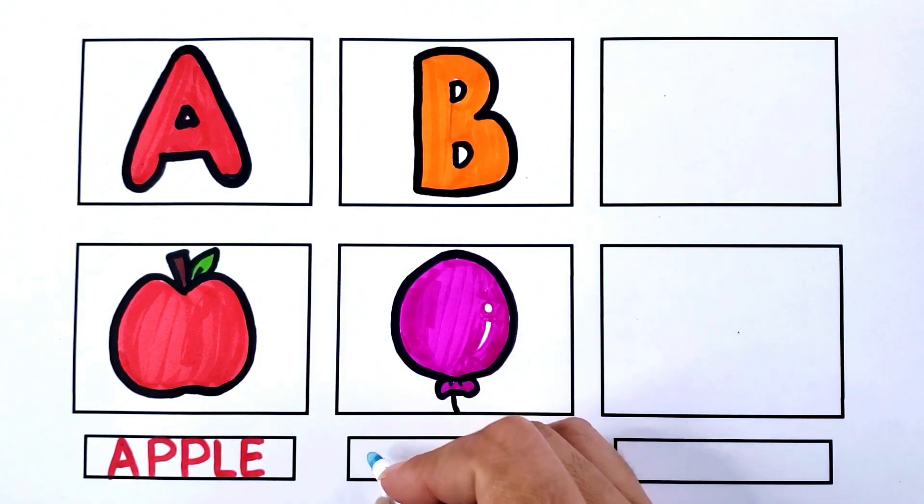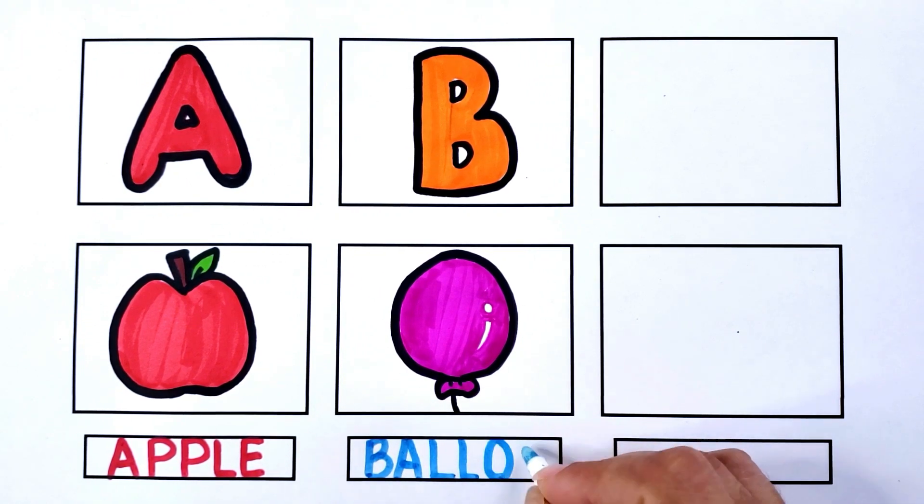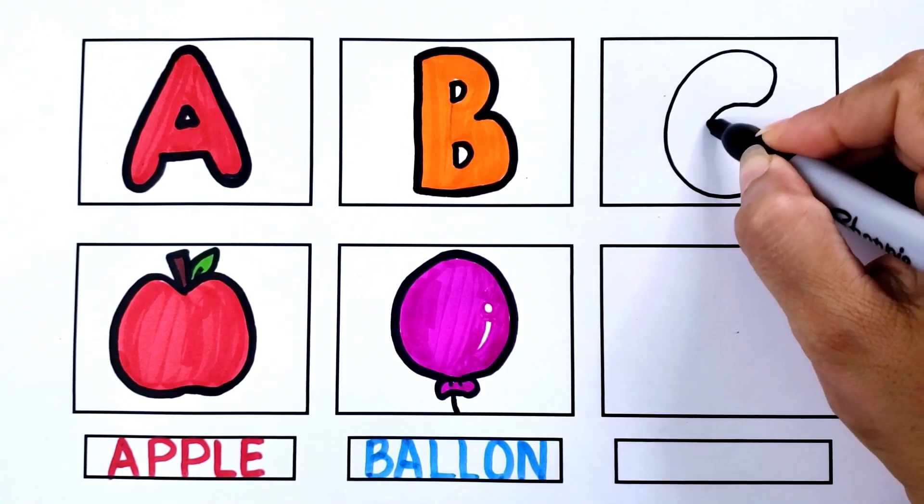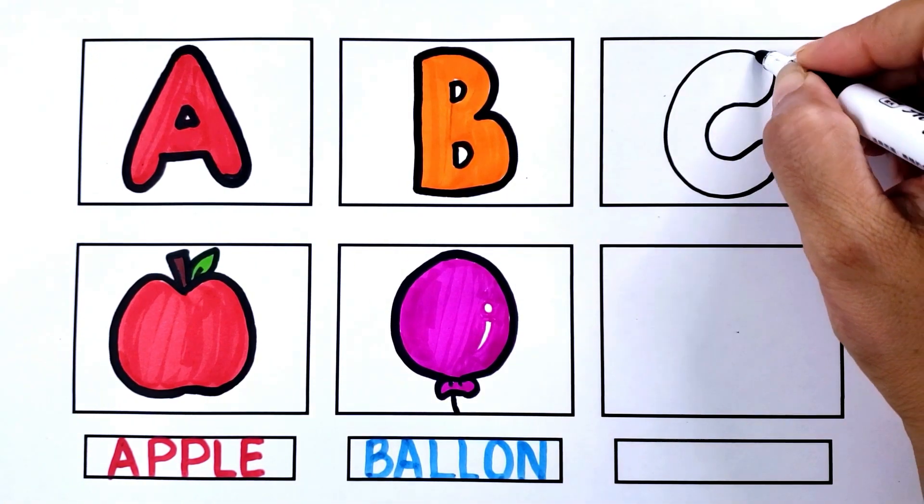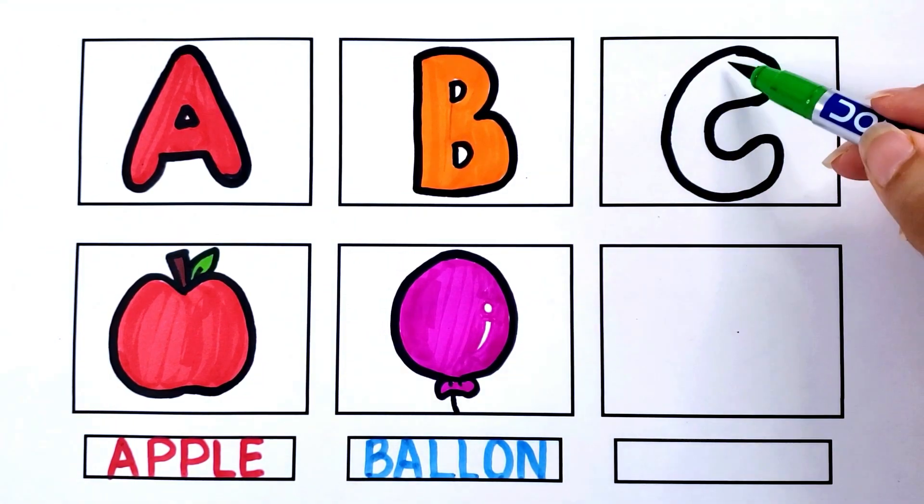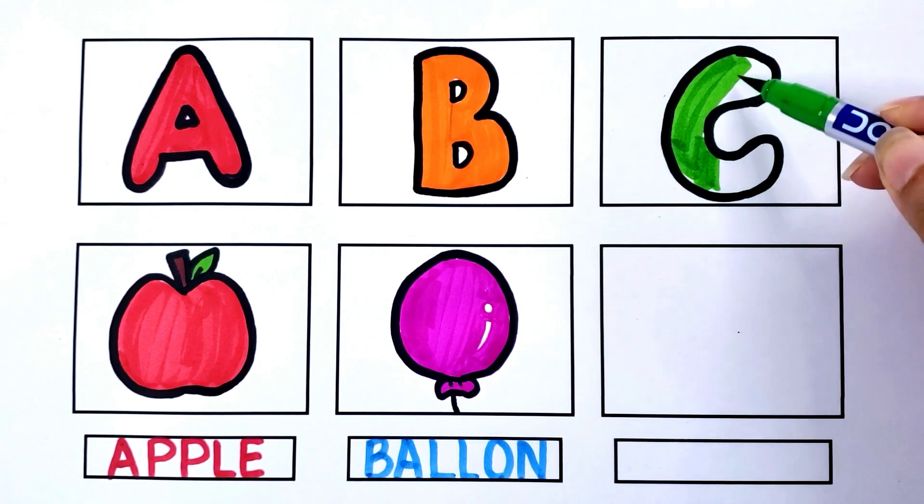Now I know my ABCs, next time won't you sing with me? A, apple. B, balloon. Now I know my ABCs, next time won't you sing with me?